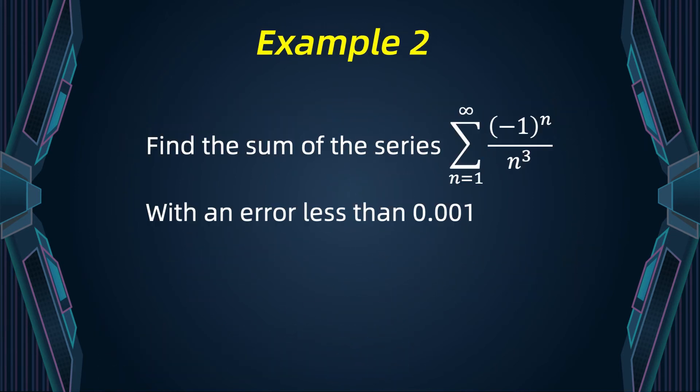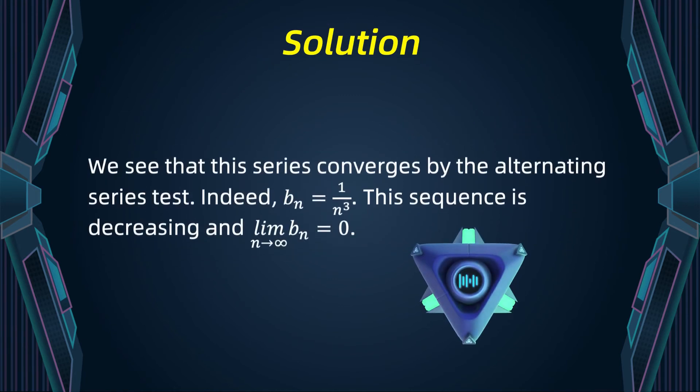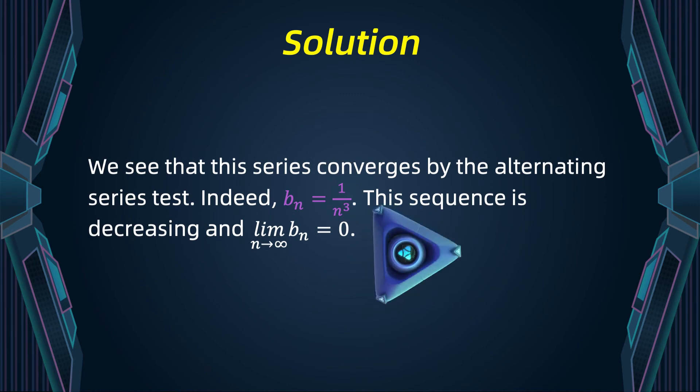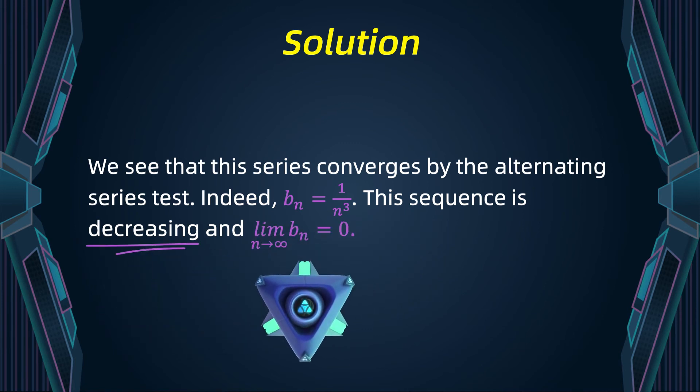In this example, we are given the series from one to infinity of minus one to the n divided by n cubed. We must find the exact value of the sum with an error less than 0.001. The alternating series test gives us the convergence of our series. Indeed, bn is one divided by n cubed. The bn is clearly positive and it is a decreasing sequence. Its limit is clearly equal to zero.